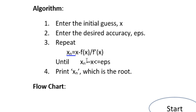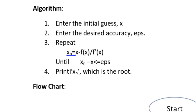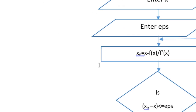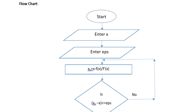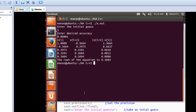Once we've found a value of xn that is not greater than x by epsilon, we print that xn — that would be our root. The flowchart is straightforward: start the program, have the user enter x and epsilon, calculate xn using the formula, then check whether |xn - x| is less than or equal to epsilon. If yes, print the result; otherwise, repeat the process.